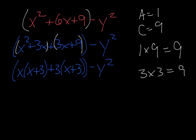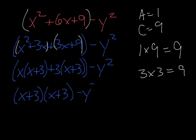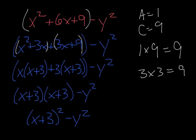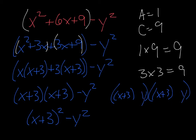Don't forget about the minus y squared. Both of these groupings have a common factor of x plus three, so we can take that out front: x plus three, leaving us with x plus three. Now we rewrite this as (x plus three) quantity squared minus y squared, and now we have a difference of squares problem. We take the square root of both terms — square root of (x plus three) squared is x plus three, square root of y squared is y — one gets a plus and one gets a minus.